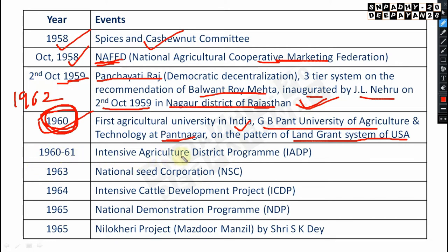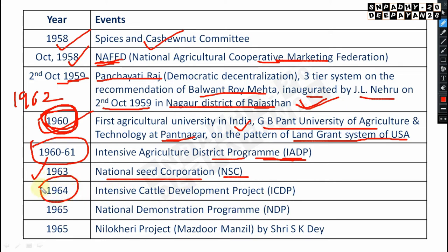From 1960–61, the Intensive Agricultural District Program (IADP) is important from an abbreviation point of view. The National Seeds Corporation (NSC) came in 1963. In 1964, the Intensive Cattle Development Project (ICDP) was started. In 1965, the National Demonstration Program (NDP) was launched.